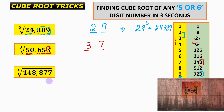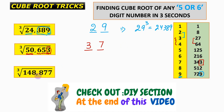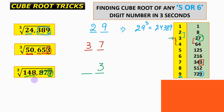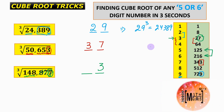For the cube root of 148,877: the unit digit is 7, and a unit place of 7 in the cube corresponds to an original unit digit of 3, so we write 3. Discarding the last three digits leaves 148. Since 148 lies between 125 (5³) and 216 (6³), the tens digit is 5, giving the answer 53.